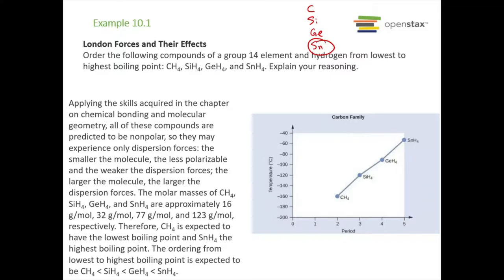You can also see that in the graph, with temperature on the y-axis and period on the x-axis. Carbon is in period two, so methane has a boiling point around negative 160 degrees Celsius. SiH4 is around negative 120, GeH4 around negative 90, and SnH4 around negative 50. The larger the molar mass, the higher the boiling point.